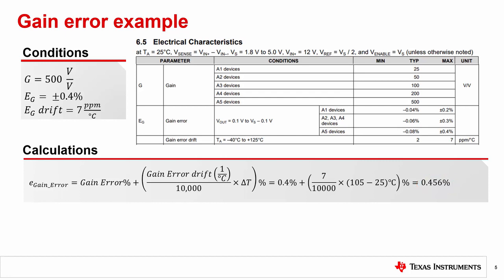If this yields more error than you can stomach, you could consider heat sinks, or you could choose a different device. When choosing a different device, you will often find that a better drift specification often accompanies a better gain error specification.